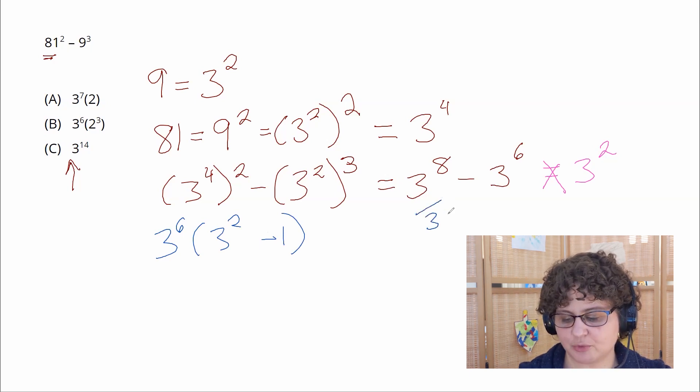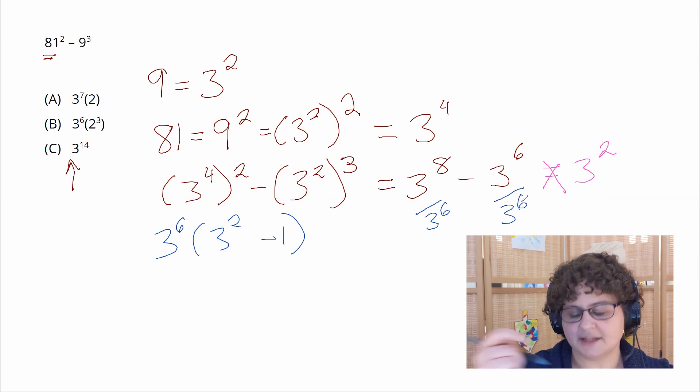And the way that I'm getting those two terms is going to the original and saying 3 to the eighth divided by 3 to the sixth well that's the same thing as 3 squared and 3 to the sixth divided by 3 to the sixth that's the same thing as 1. So the whole expression is 3 to the sixth times 3 squared minus 1.